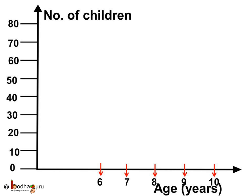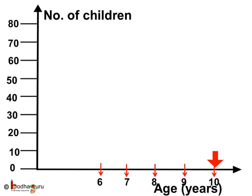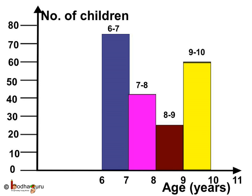On the horizontal line we will write the ages at fixed intervals: 6, 7, 8, 9, and so on. Now we place the bars representing the number of children.